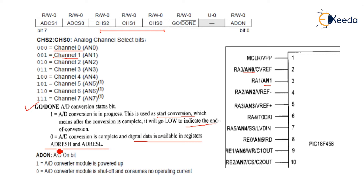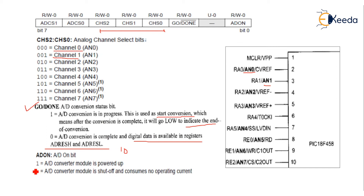The ADC produces a 10-bit digital output. The lower 8 bits are stored in the lower register and the upper 2 bits are stored in the higher register. This is similar to timers, where we have TMRXH and TMRL for 16-bit data, because SFRs are 8-bit and we have to break the data into two 8-bit registers.